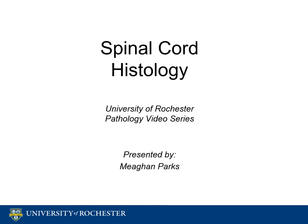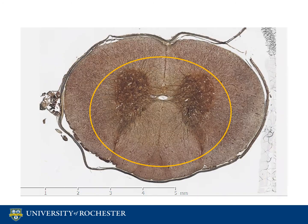This video will give a brief overview of spinal cord histology. The butterfly-shaped section of tissue that is dark brown in color is the gray matter. Gray matter is made up of interneurons and cell bodies.